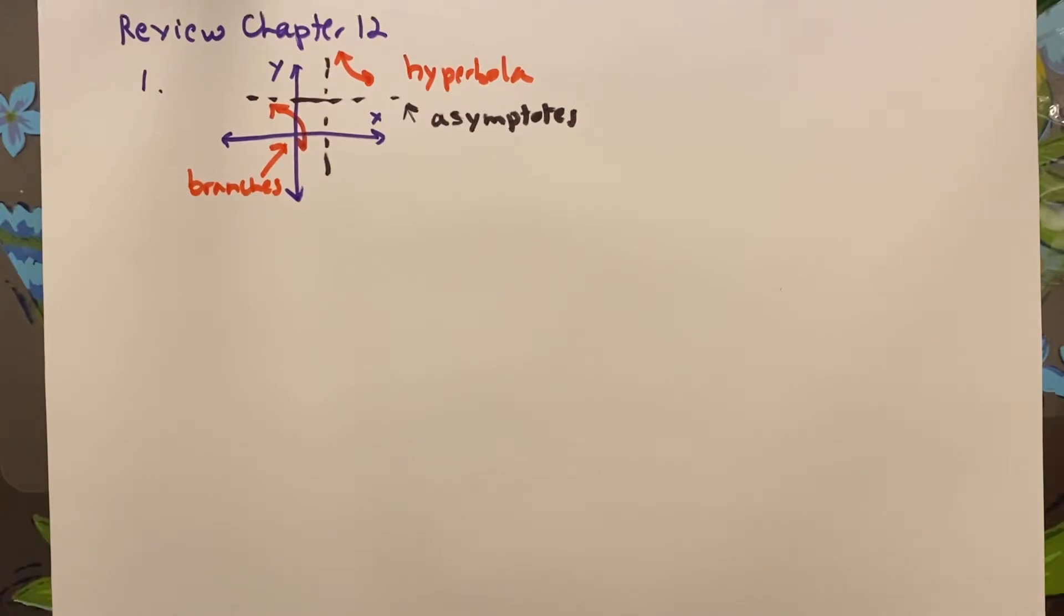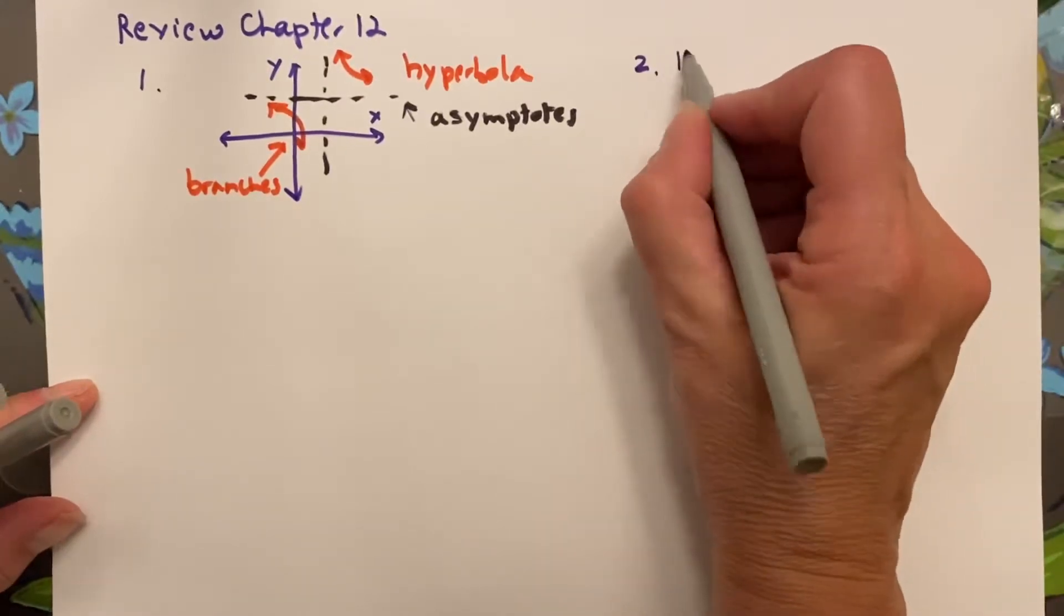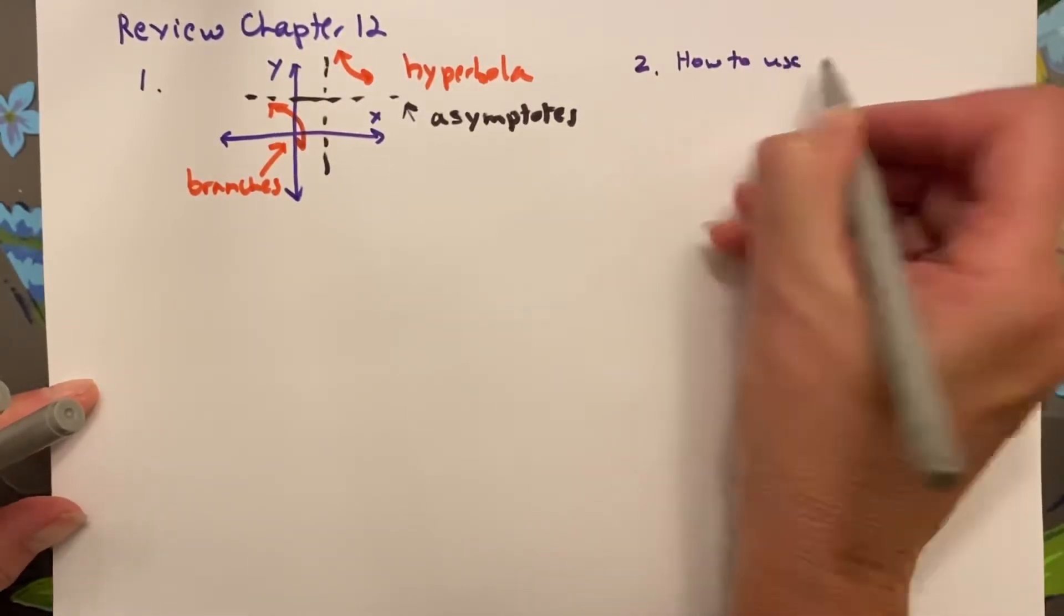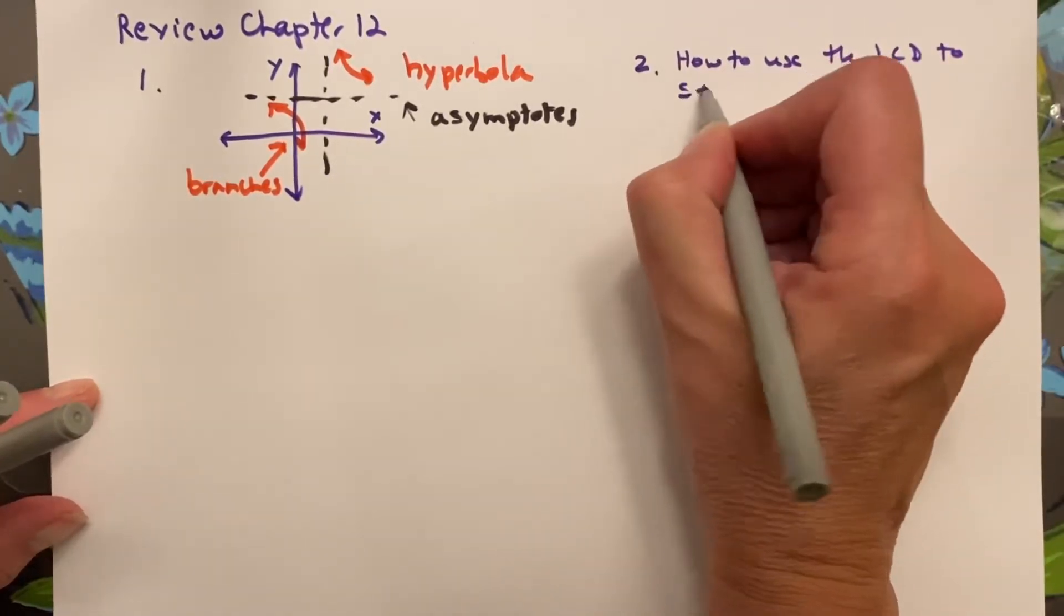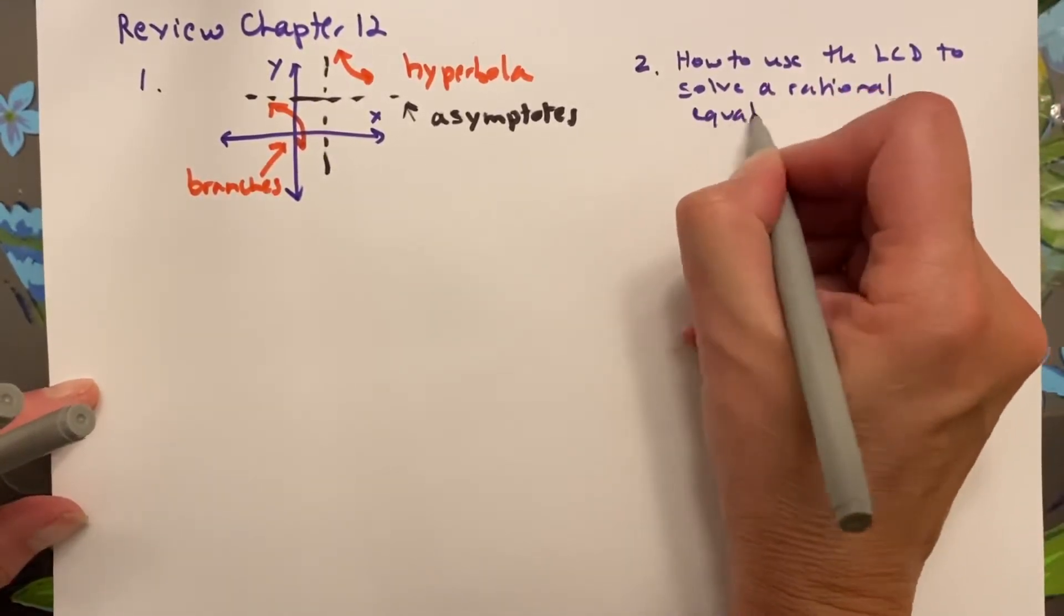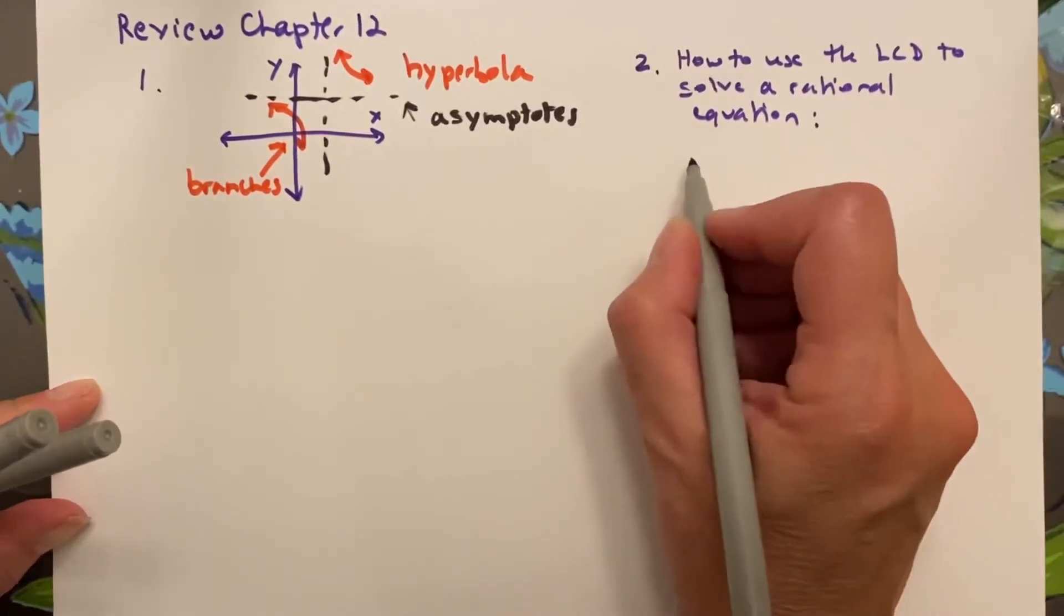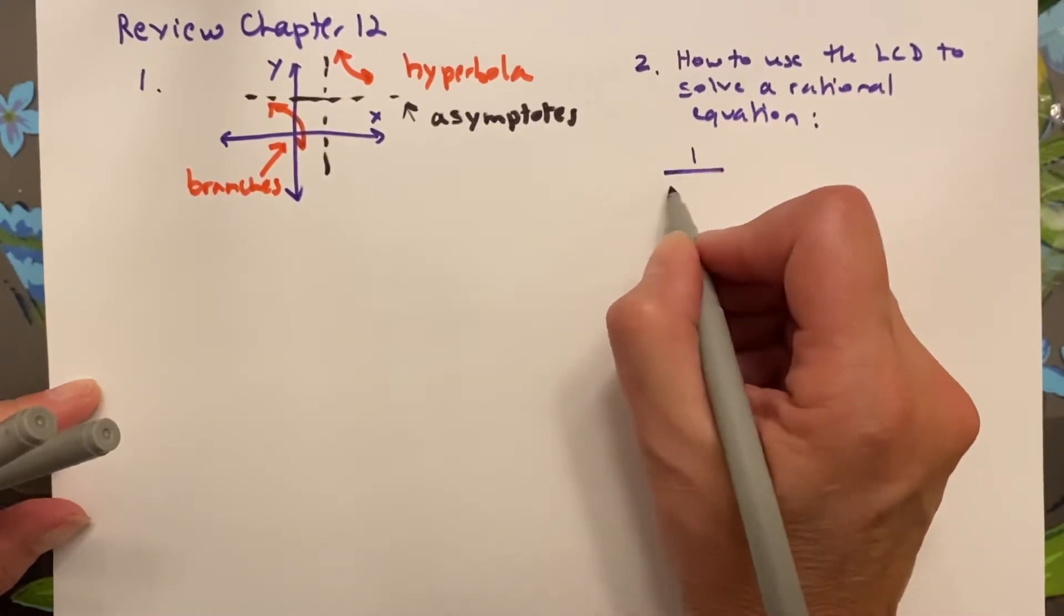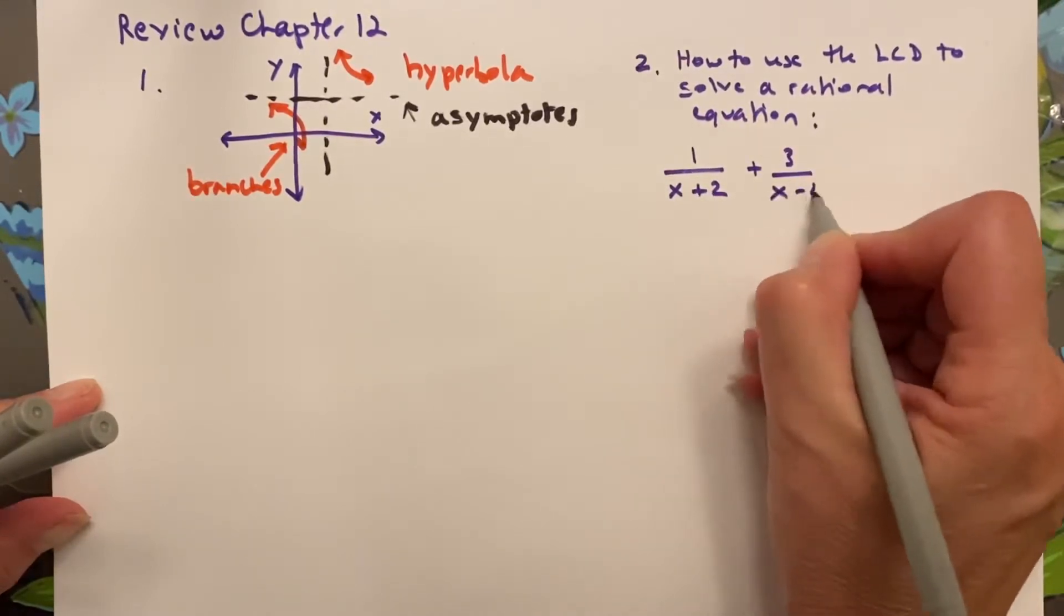Number 2 says explain how you can use the least common denominator to solve a rational equation. To explain that, it is essentially the same way you've always done with a fraction. Say you have 1 over x plus 2 plus 3 over x minus 4.